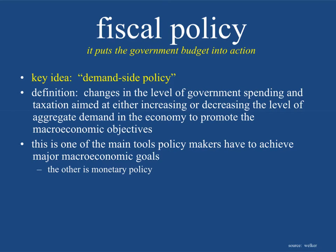If the government starts taxing, that eliminates or creates less disposable income, so consumption is going to go down and aggregate demand comes in. If governments cut taxes, that means people have more money in their pocket at the end of the month, they're going to spend it, so aggregate demand is going to go out — because consumption is one of the factors of aggregate demand.